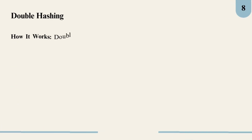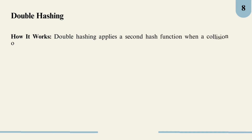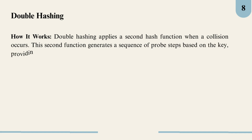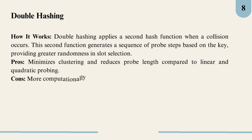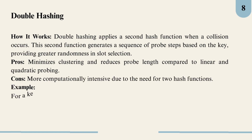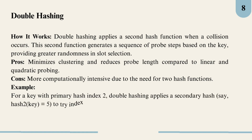Double hashing is an advanced technique that tackles clustering effectively by using two hash functions instead of one. When a collision happens with the first hash function, we apply a second hash function to find the next slot. The second function generates a unique probe sequence based on the key, helping to avoid clusters entirely. Double hashing is one of the most efficient probing methods since it minimizes both primary and secondary clustering. However, it can be a bit slower because it requires calculating two hash functions. But it's an excellent choice when you want to keep a low load factor and avoid the clustering seen in linear and quadratic probing.